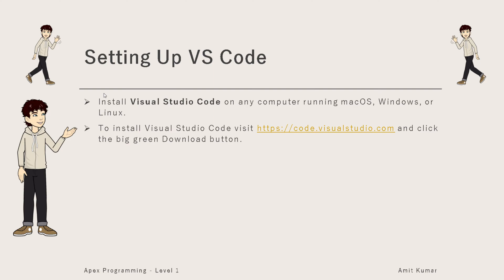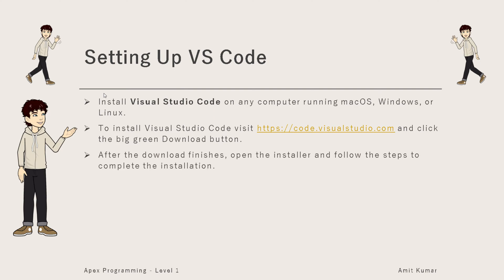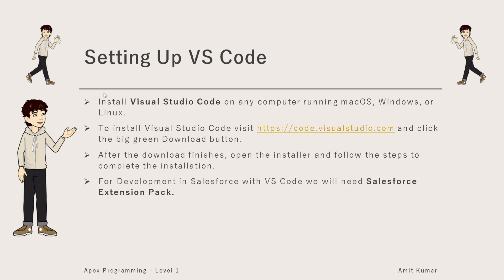Go to code.visualstudio.com and click the big green download button. After the download finishes, open the installer and follow the steps to complete the installation — it's a simple next-next-install kind of installer. For development in Salesforce with VS Code, we will need the Salesforce Extension Pack.